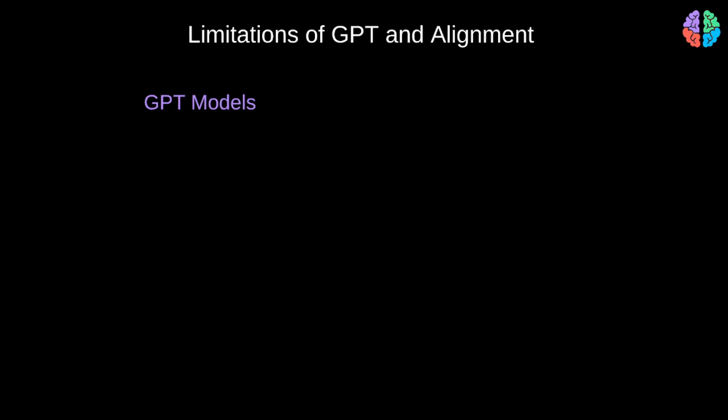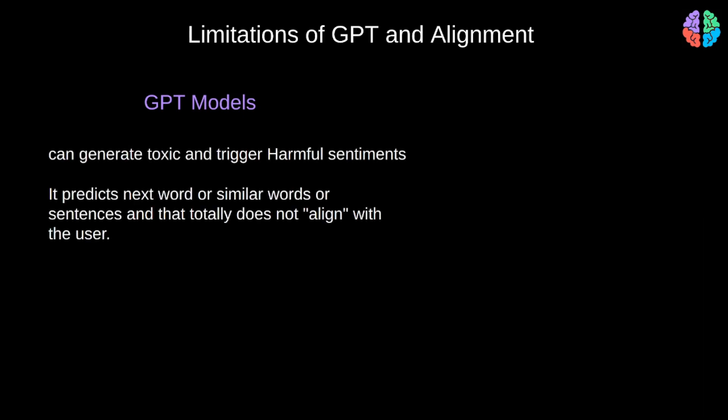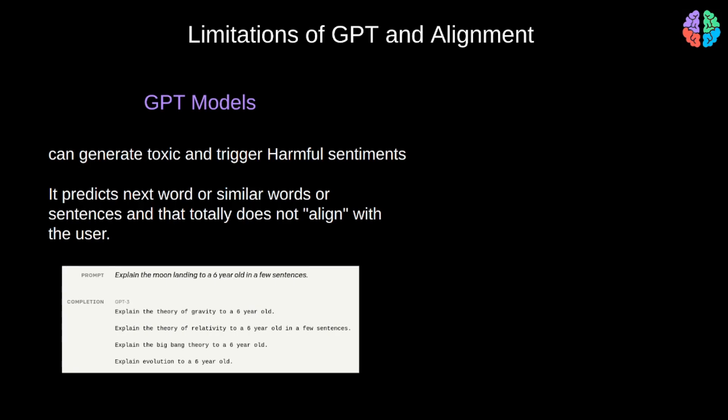The ChatGPT model is a fine-tuned GPT model, or more specifically GPT 3.5. So it only makes sense to look at the drawbacks of the GPT model before we learn how ChatGPT addresses them. One of the first drawbacks of GPT is that it can repeat itself, semantically contradicting itself at times. It can even be provoked to throw toxic and harmful content. The reason is that it's purely trained to complete sentences and does not understand what the user exactly wants — in other words, it does not align with the user.